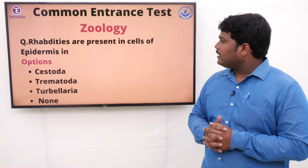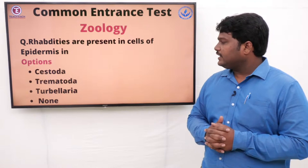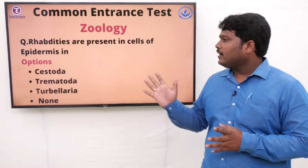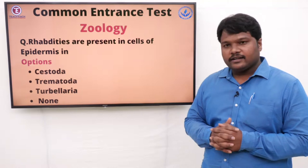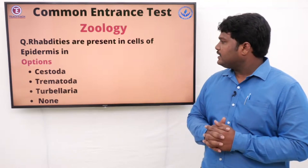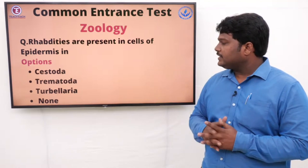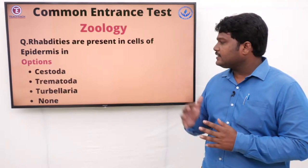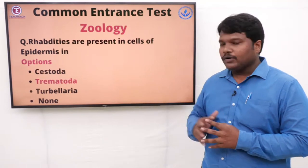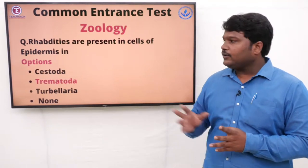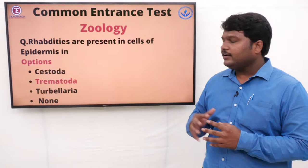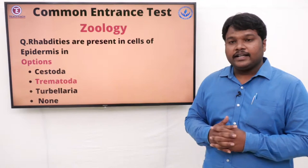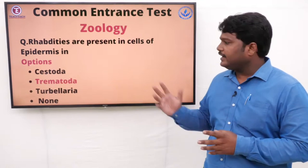Question 23: Rhabdites are present in cells of epidermis in. Options: A) Cestoda, B) Trematoda, C) Turbellaria, D) None. The right answer is Turbellaria. Rhabdites are present in the epidermal cells of Turbellaria.